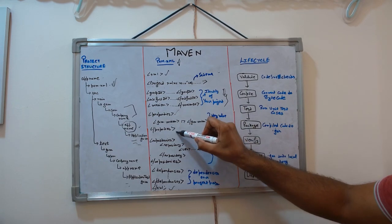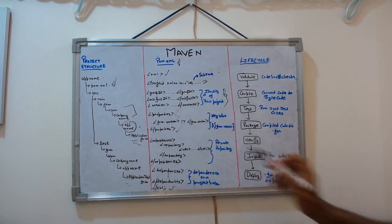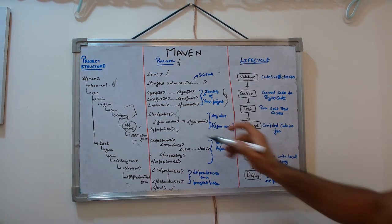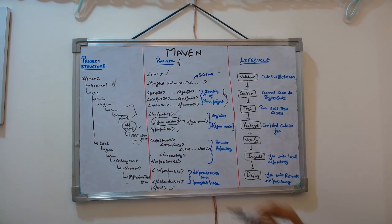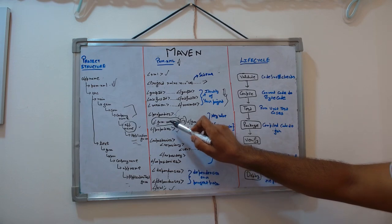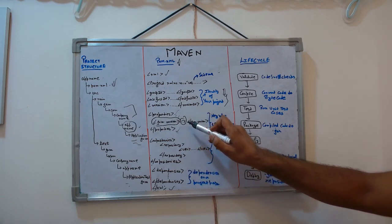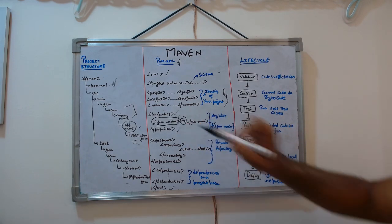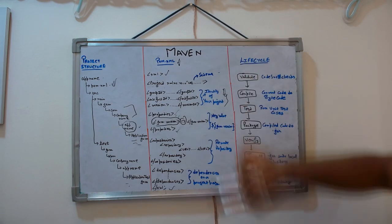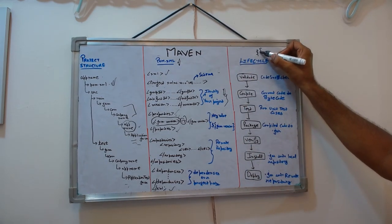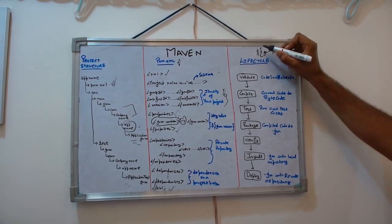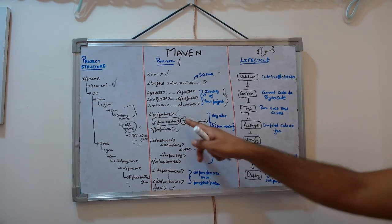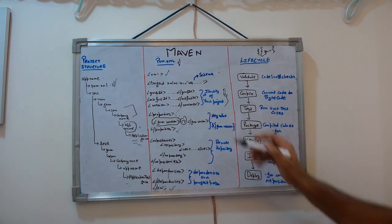Then we have the properties section. Inside properties, whatever you write is a key-value pair — the tag name is the key and the content is the value. For example, I have 'java.version' as the key with the value '17'. You can then use this key anywhere in your pom.xml using the placeholder syntax — dollar sign, curly brace, 'java.version', close curly brace — and it will be replaced with '17'.